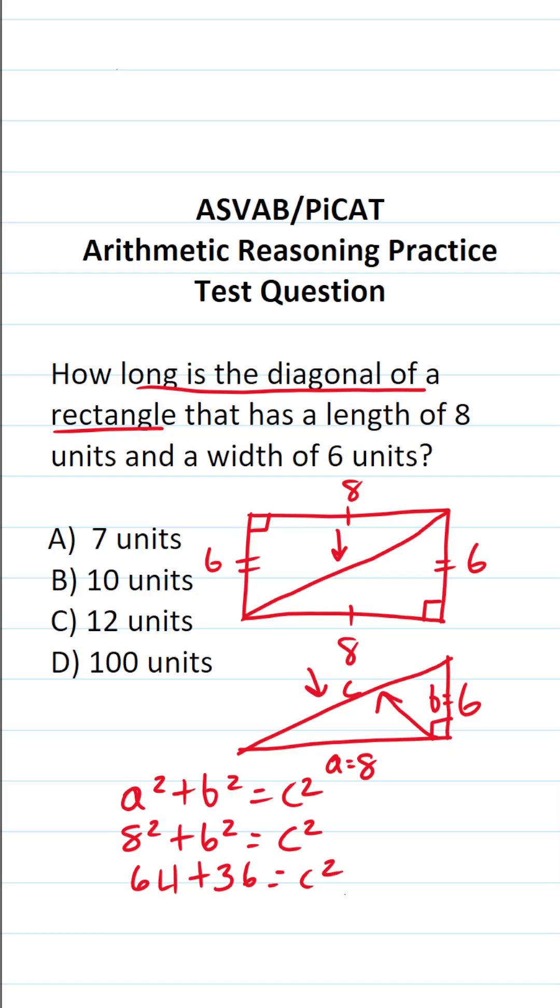Sixty-four plus 36, you could do it off to the side if you can't do it mentally. It's going to be 100. So this becomes 100 equals C squared.